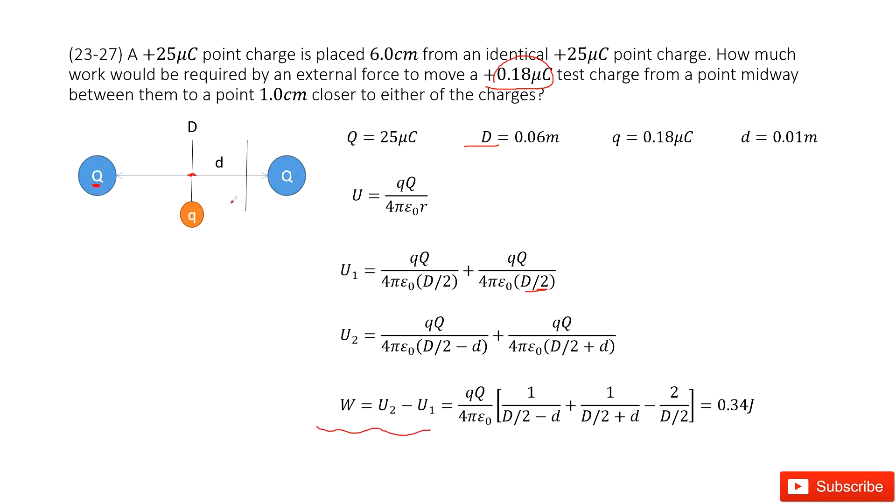Now we move this test charge a distance d away. And then we can write its potential energy. First one from the right-hand side point charge. So you can see the distance for this one is D over 2 minus d, because this distance is d and this length is just D over 2. So D over 2 minus d is the distance for this part.